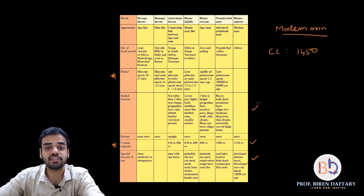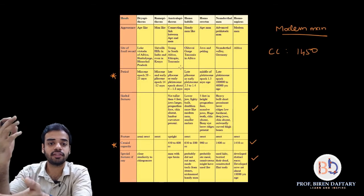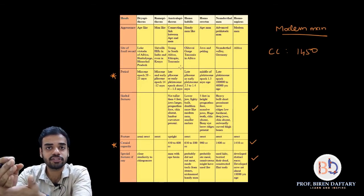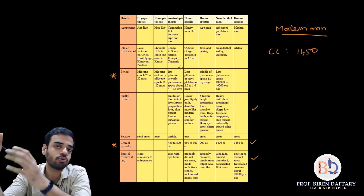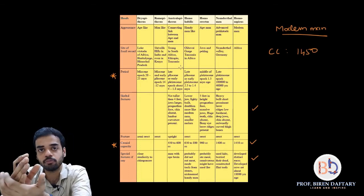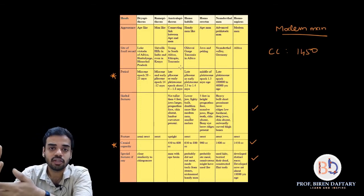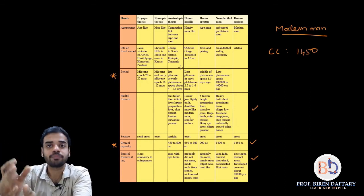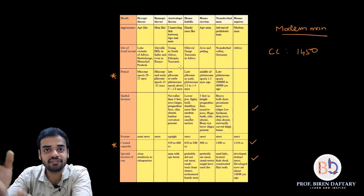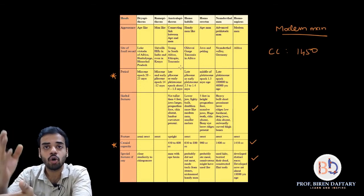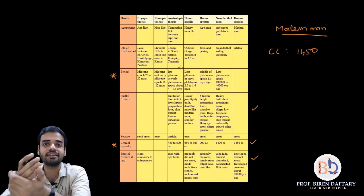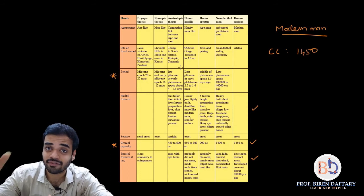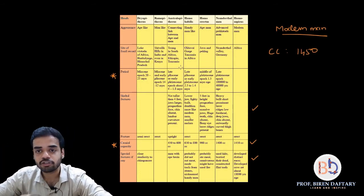Summary of fossil sites: Dryopithecus — Himachal Pradesh and Lake Victoria; Ramapithecus — Shivalik Hills India and Kenya (Kenyapithecus); Australopithecus — Tong South Africa, Ethiopia, Tanzania; Homo habilis — Africa; Homo erectus — Java (Java Man) and Peking China (Peking Man); Neanderthal man — Neanderthal Valley Germany; Cro-Magnon man — Cro-Magnon caves France; Homo sapiens — first fossil found in Africa.